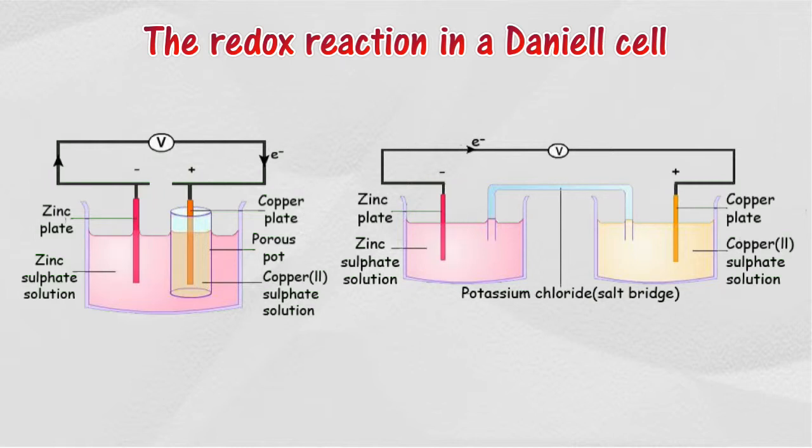Therefore, zinc releases two electrons to form zinc ion. Hence, zinc rod acts as the negative electrode. The electrons are transferred from the zinc rod to the copper via the outer circuit.